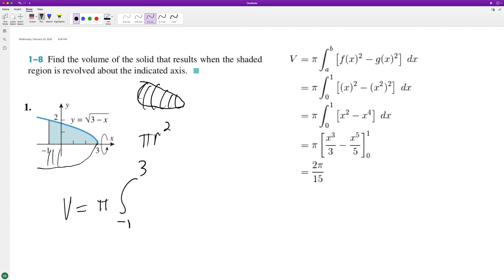Our r squared - the radius is each individual component here, and that's going to be the equation. So we have the square root of three minus x, squared.